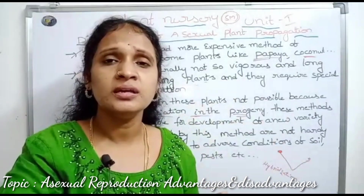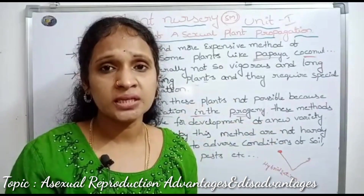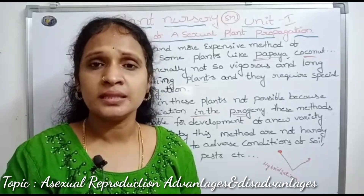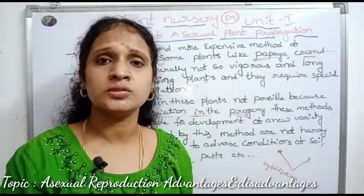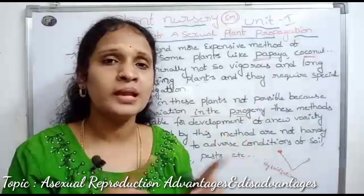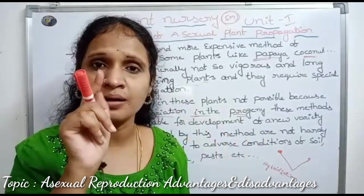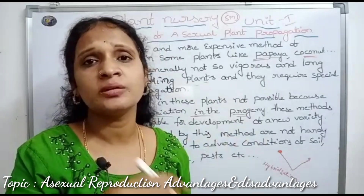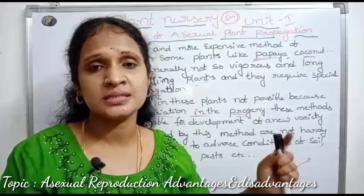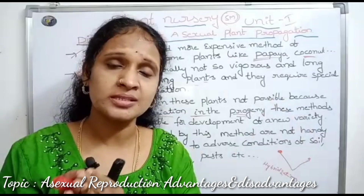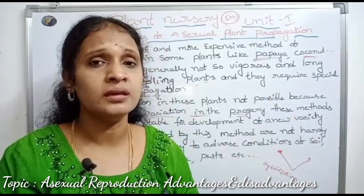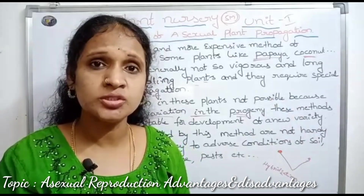Vegetative propagation does not show any genetic variation. Only a single part of one plant is used — no male or female crossing. If the plant has diseases, those diseases continue into the next progeny in the same cycle. There is no genetic recombination and no genetic variation.